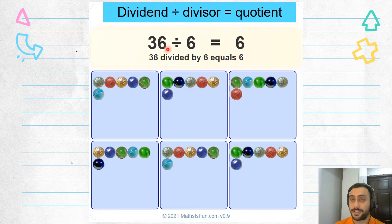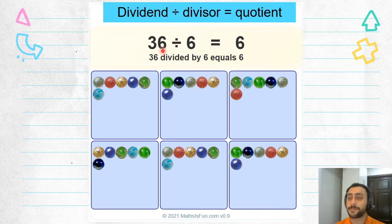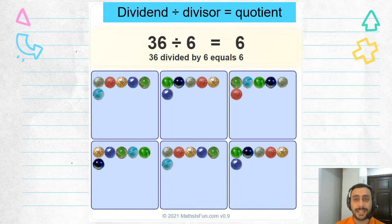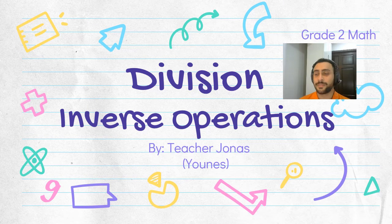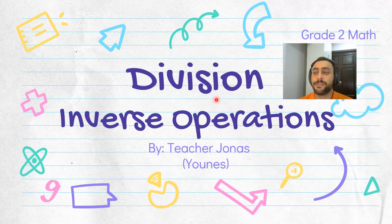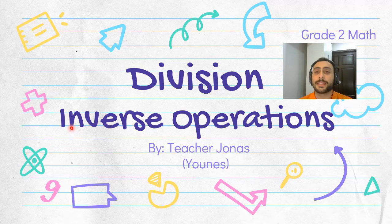Now let's look at this example. Repeat after me: 36 divided by six equals six. So cool. Now let's talk about the new topic.